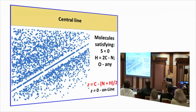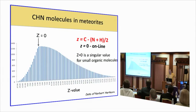To cut the long story short, it turns out the molecules on the line follow the simple rule, Z equal to zero, where Z is an index corresponding to C minus N plus H over two. It does not correspond to any previously known chemical index, but there are millions of them. So what is so special about Z equal to zero?